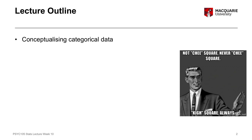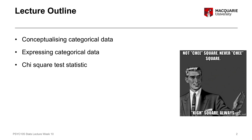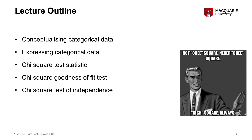Chi-square tests are all about categorical data — understanding categorical data, how to summarize and communicate it, and how to perform statistical tests to answer hypotheses on categorical data. We'll talk about the chi-square test statistic itself and then two different kinds: the goodness of fit test, which is the single variable test, and the test of independence, which is the test of association.